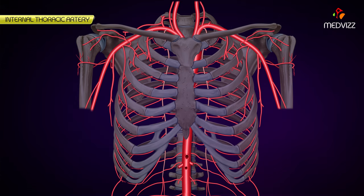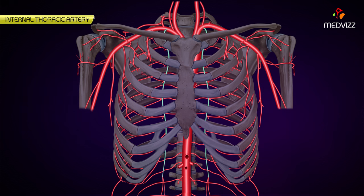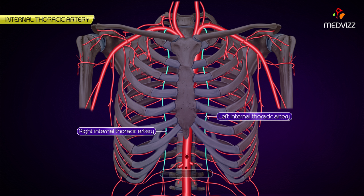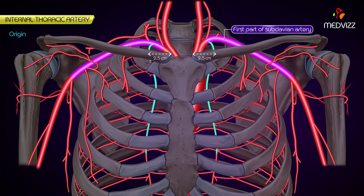In this topic we will be discussing the origin, course, relations, and branches of the internal thoracic artery. There are two internal thoracic arteries, right and left, situated deep to the anterior chest wall on either side of the sternum. The internal thoracic artery arises from the first part of the subclavian artery, about 2.5 centimeters above the medial end of the clavicle, opposite to the origin of the thyrocervical trunk.